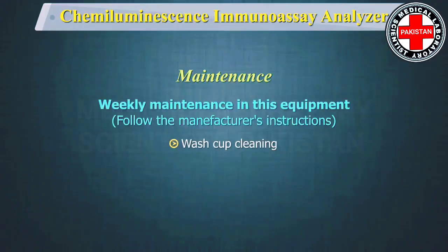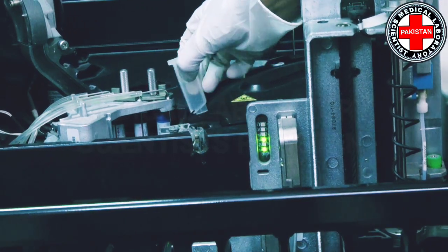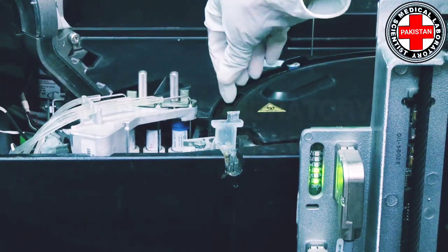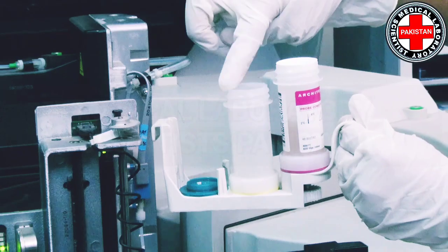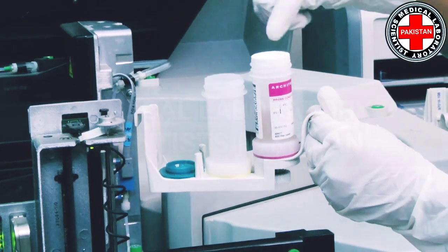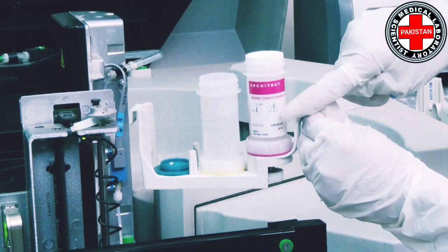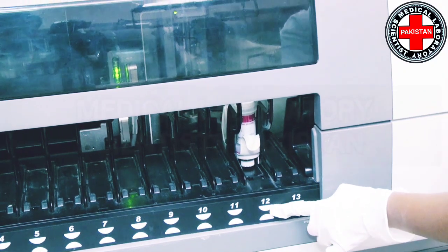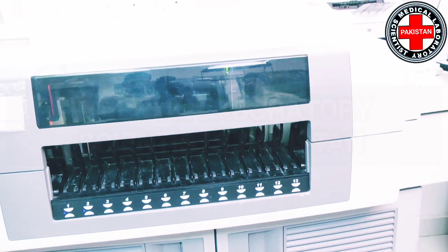Wash cup cleaning: The wash cup is where the probe is washed and leaves debris, so it needs to be cleaned manually. Remove the wash cup, clean with distilled water, and replace gently. Wash zone probe cleaning is done with 0.5% hypochlorite and a probe conditioning solution to remove residual hypochlorite. Place both solutions on the reagent carrier, load it on the system, and the cleaning process will commence automatically on giving the command.